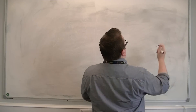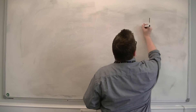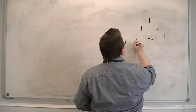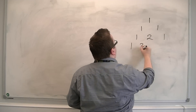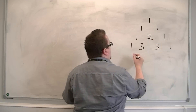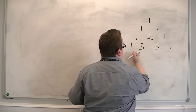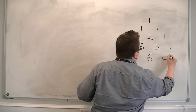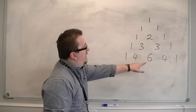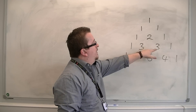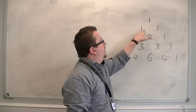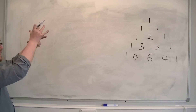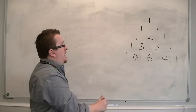Pascal was a Greek mathematician, and the triangle that was put together looked like this, where each entry is the sum of the previous two above it. And so six is the sum of three and three, three is the sum of two and one, two is the sum of one and one, and so on. And you can keep on going further down.